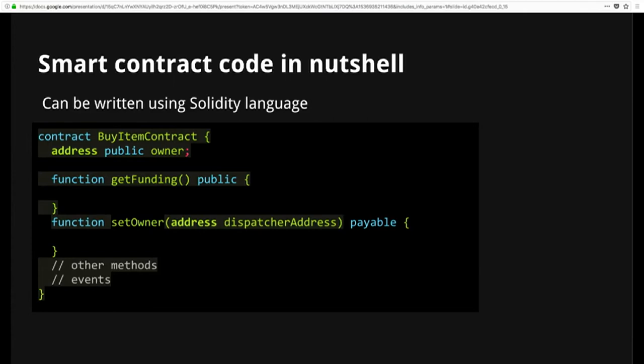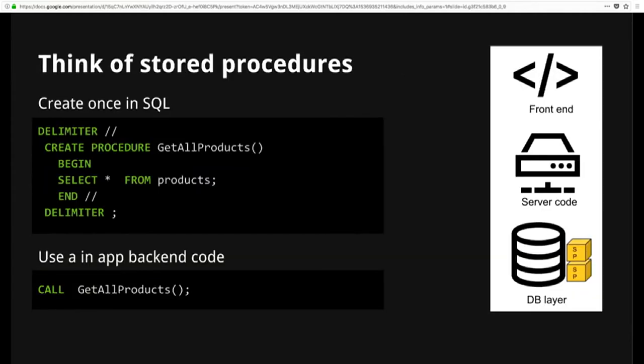To get a better overview of how that might work — if you've heard about stored procedures in SQL, that's something you can think of it like. It's a piece of code which is on the server side, close to your database, and can validate and extract some data, but it's not in your backend code — it's further down the stack. So if you think of smart contracts, it's something like that. It's stored in the blockchain, it works within a blockchain, and you can access it to retrieve data for your app.